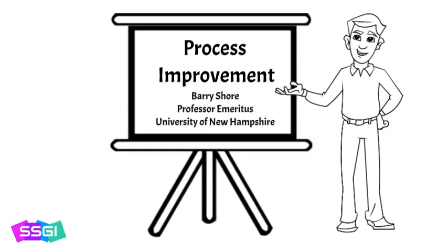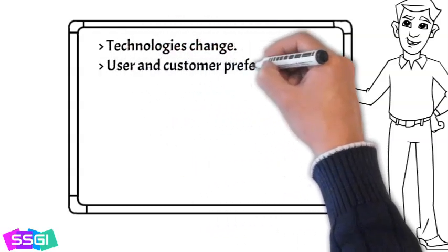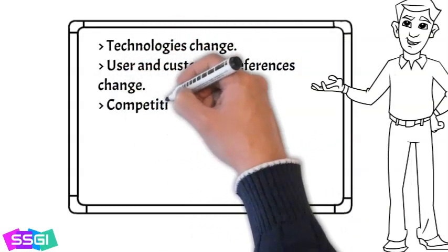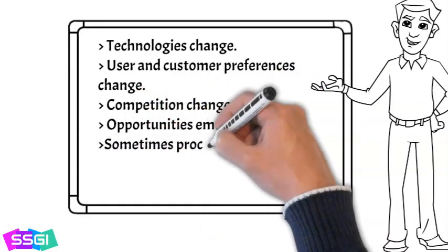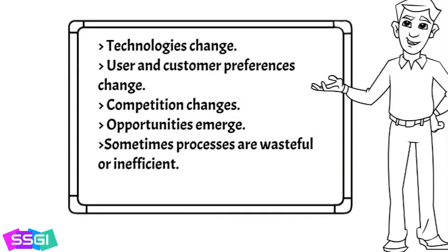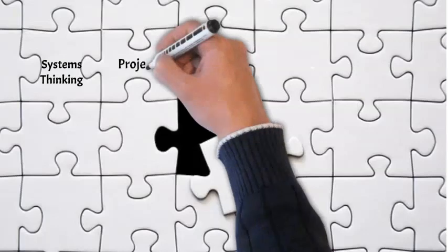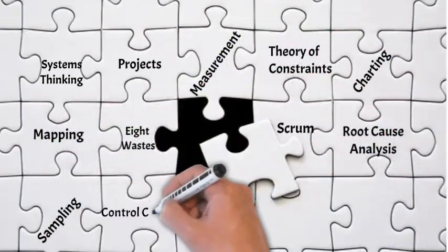Processes are routinely exposed to change. Technologies change, user and customer preferences change, competition changes, opportunities emerge, and sometimes processes simply need change because they are wasteful or inefficient. This short guide focuses on several of the most important concepts and tools to improve process performance.